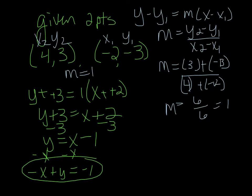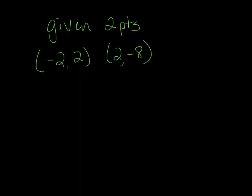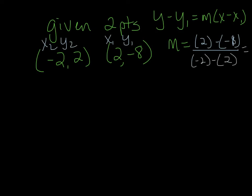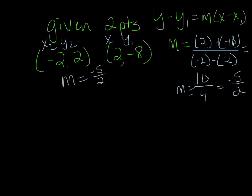Let's do another one. This one's the same thing — we need to find slope first, then use point-slope form. I'm going to label these: x sub 2, y sub 2, x sub 1, y sub 1. Slope equals 2 minus a negative 8 over negative 2 minus 2. So 2 minus negative 8 is 10, and negative 2 minus 2 is negative 4. So I get negative 5 over 2 as my slope. Now here you have two points — it really doesn't matter which points you use.